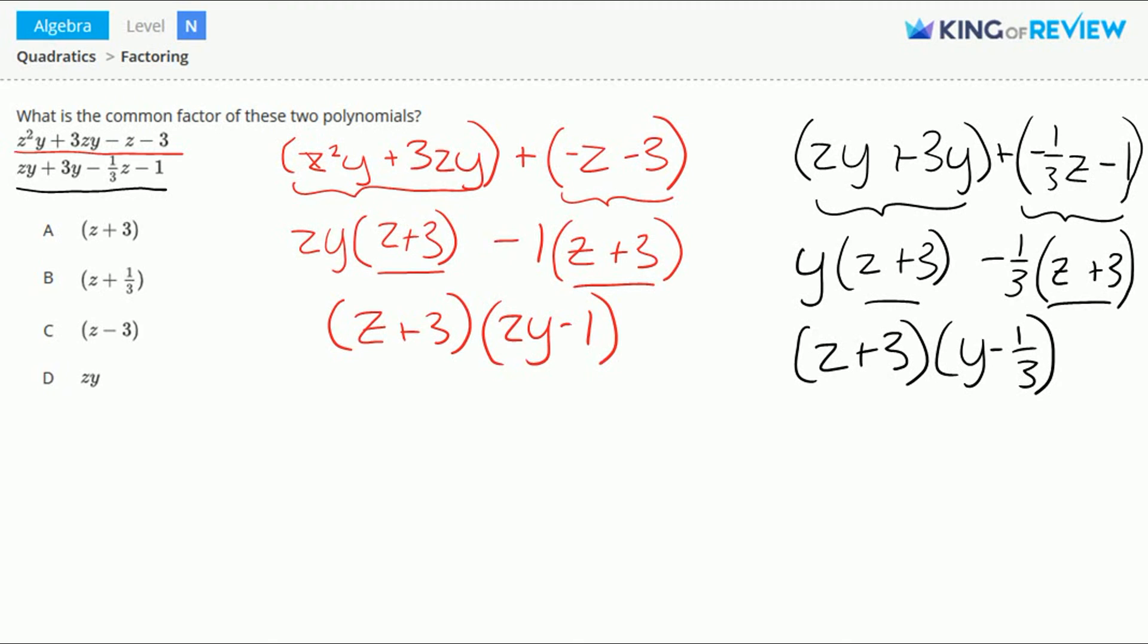In the original question, we were asked, what is the common factor of these two polynomials? We have a z plus 3 here and a z plus 3 here. So z plus 3 is the common factor. Letter A is correct.